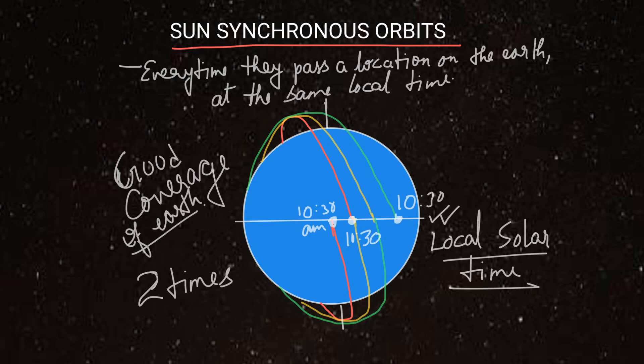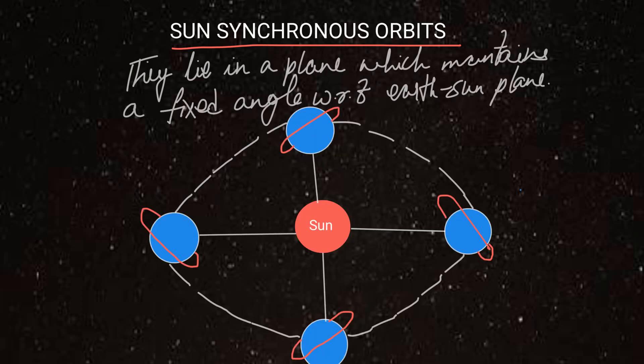Next, we can say that sun-synchronous orbits lie in a plane that maintains a fixed angle with respect to earth-sun directions. Sun-synchronous satellites lie in such a plane that their angle with respect to earth-sun line and earth-sun plane - here is the earth-sun line - their angle with this is fixed throughout.